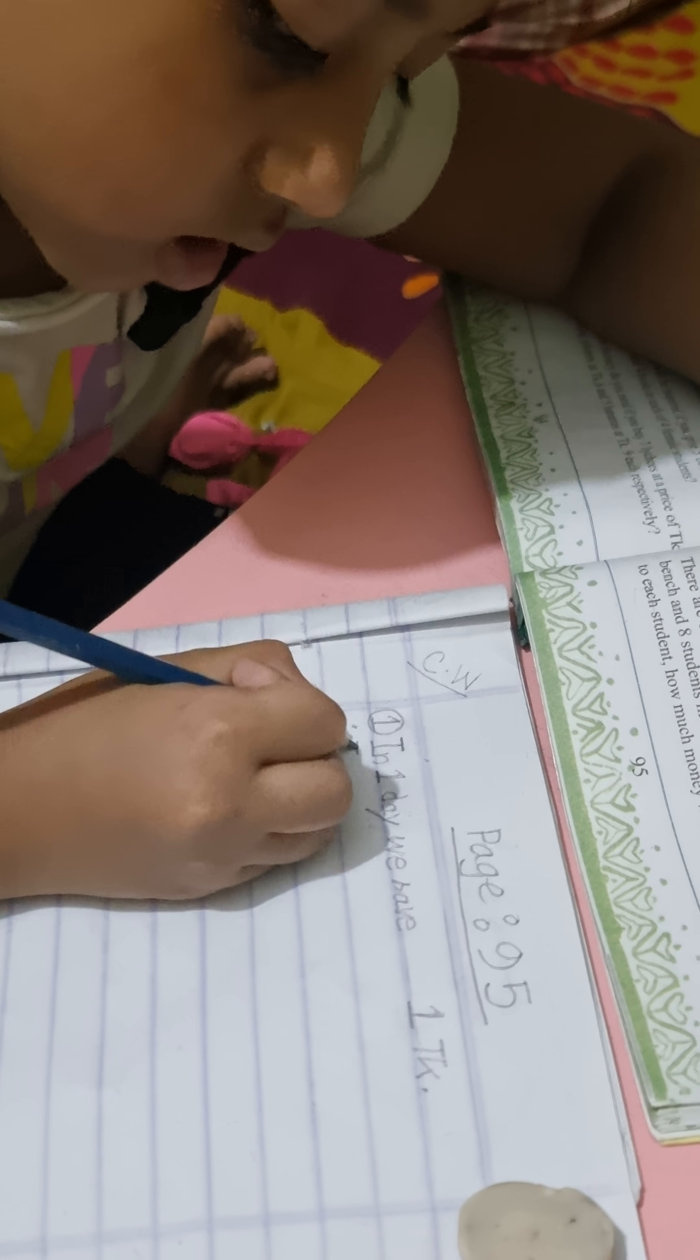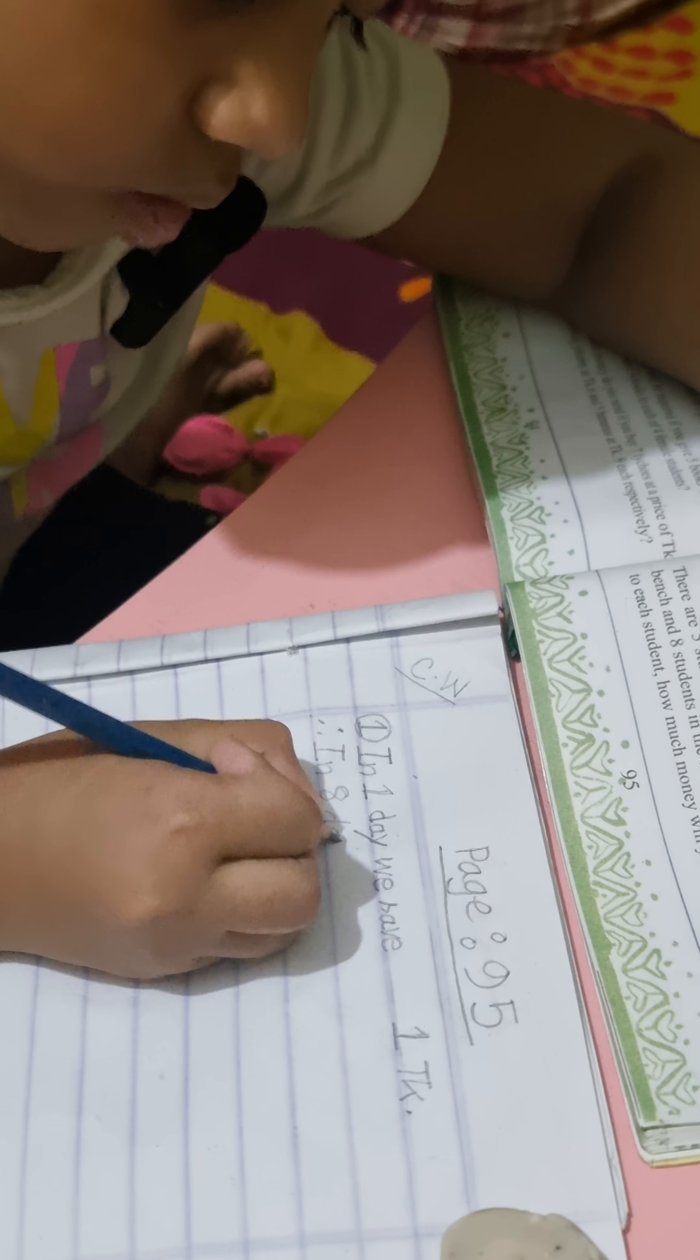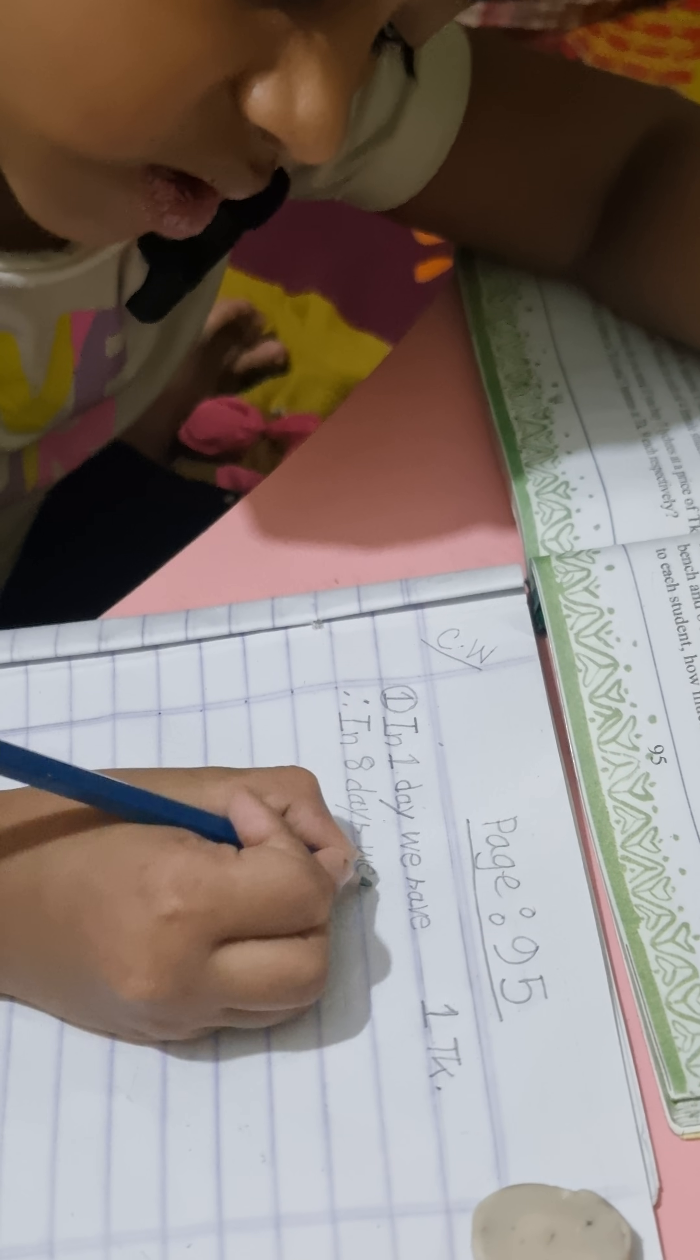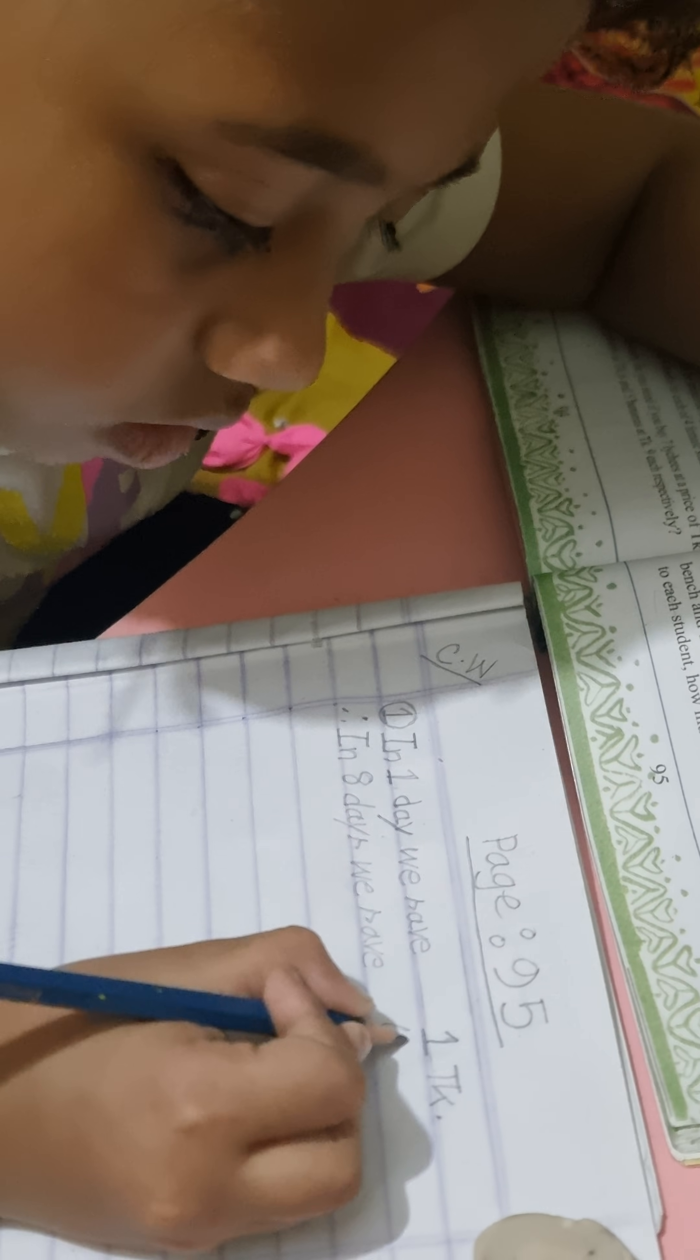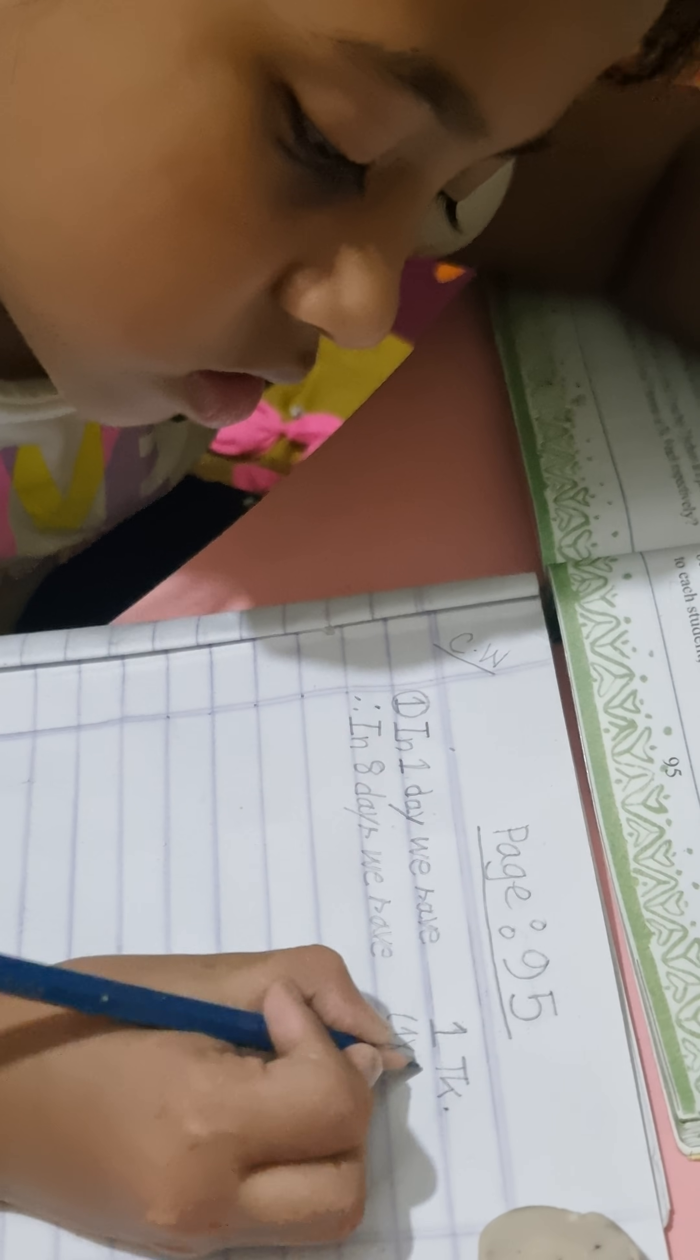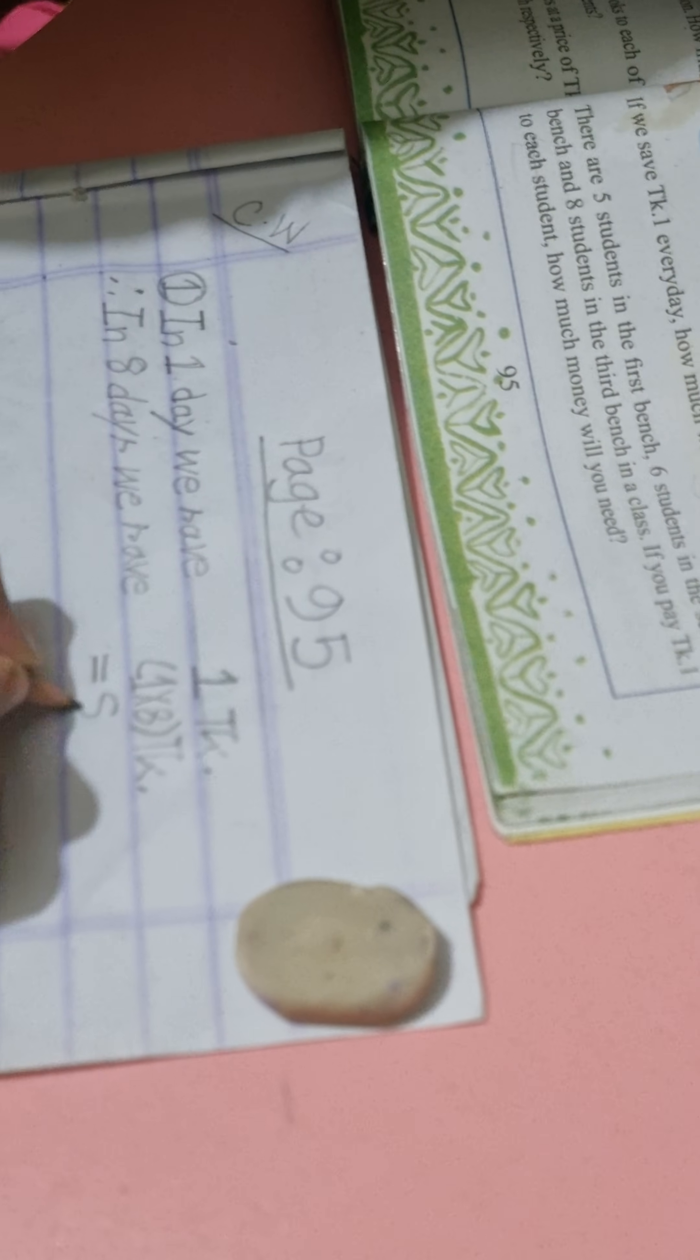So in eight days, we save one into eight taka equals eight taka.